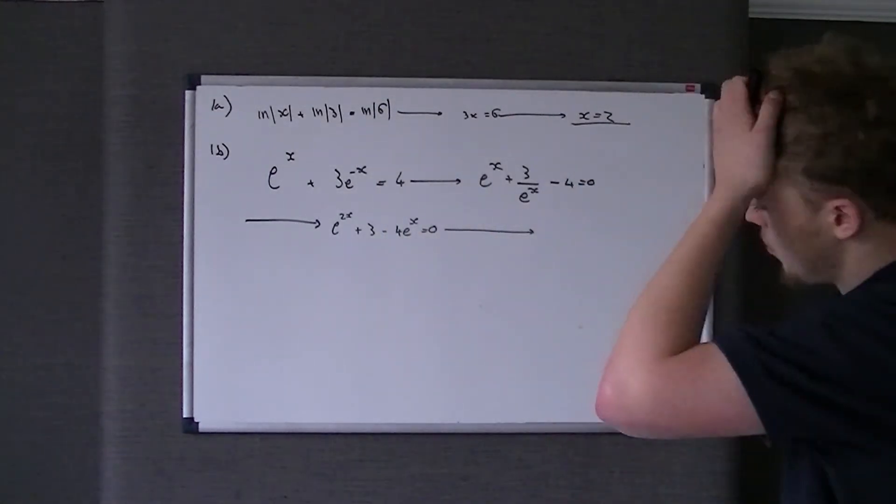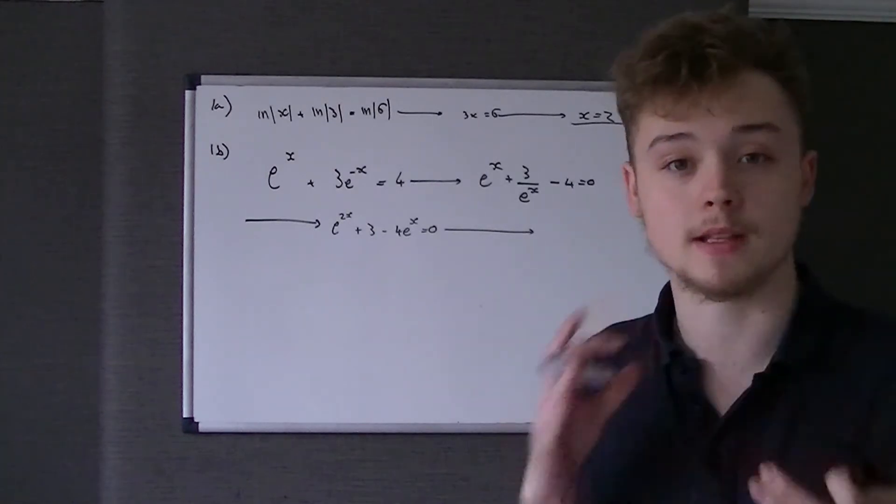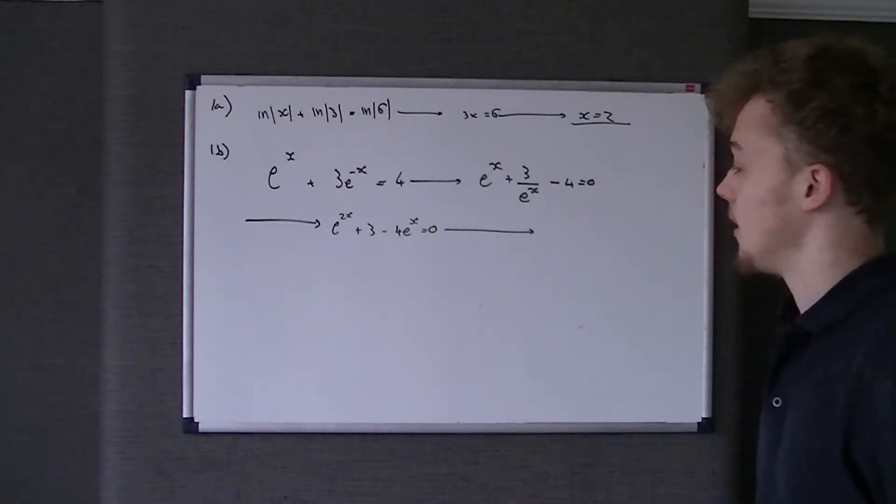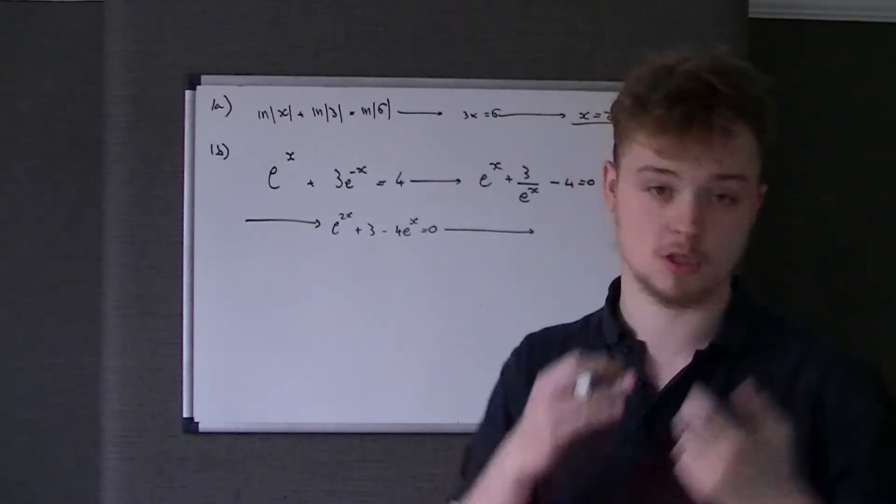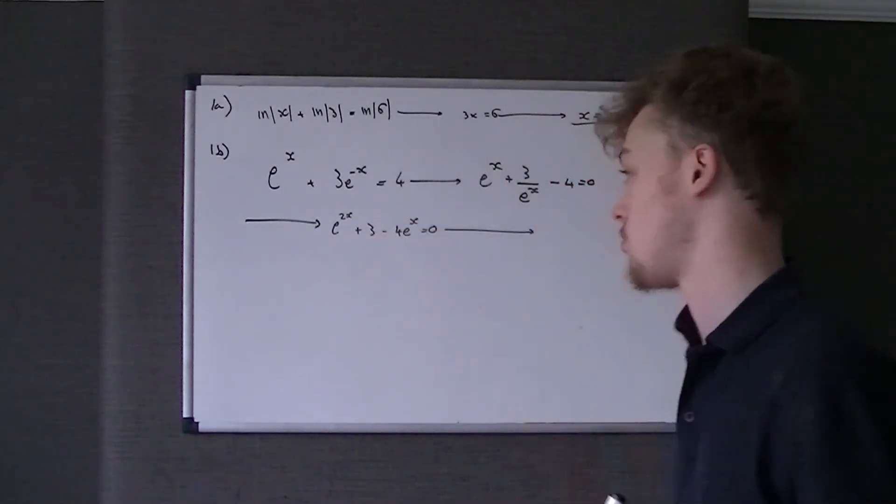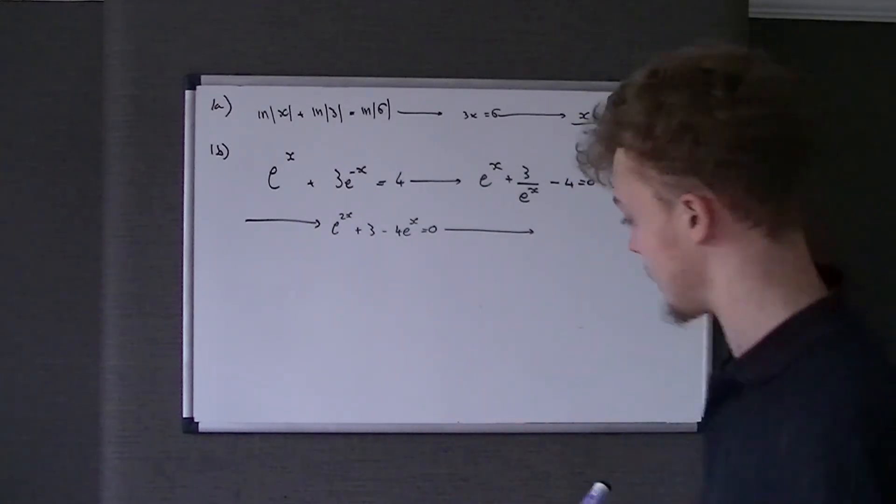So in other words, what we've got to do now is that's almost a disguised quadratic, where you imagine that e to the x is the same as x. In other words, this would be x squared plus 3 take 4x. If that was a situation, you'd factorize it.